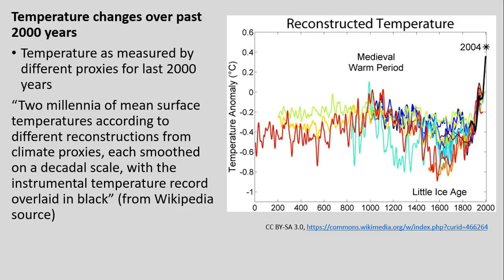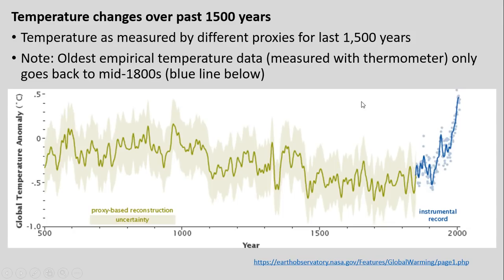Looking at temperature changes over the past 2,000 years, a graph shows a bunch of different climate proxies — some of which we talked about at the beginning — showing global climate temperature over time, and then a relatively steep increase and rise of temperature over the past couple hundred years. The oldest empirical data — things actually measured with thermometers rather than proxy data — only covers the past couple hundred years at most, going back to the mid-1800s.